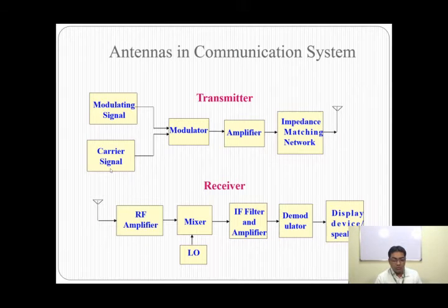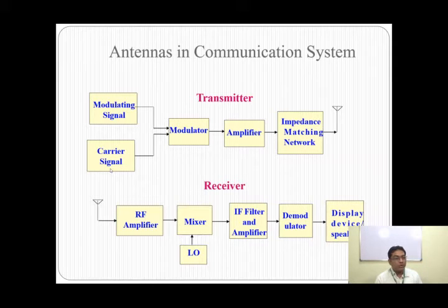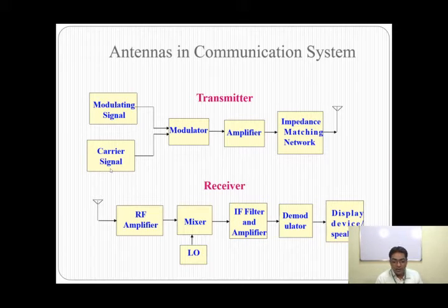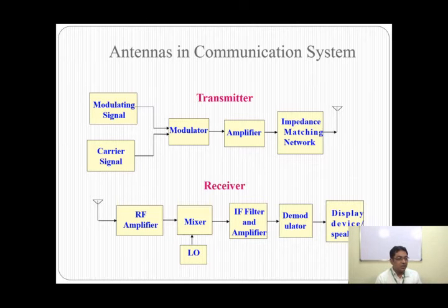Now let us look at where antennas are used, as shown in this block diagram. This block diagram is a basic example of the wireless communication system. Antennas are used in both the transmitter as well as the receiver.